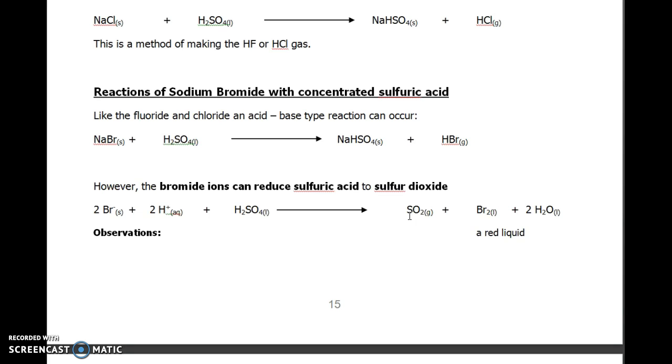This means that sulfur is accepting two electrons. Those two electrons come from the two bromide ions, hence why we've only got two bromide here. The observation you would make is a red liquid for the bromine.